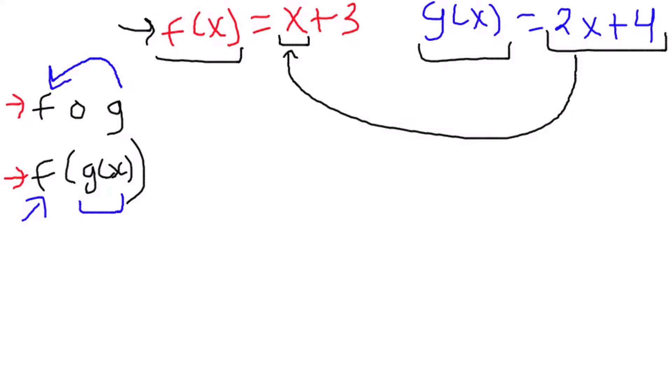So let's go ahead and write that out. Instead of the x now we're going to have a 2x plus 4, and what was left of the f function we still had that plus 3 so we have to add 3.